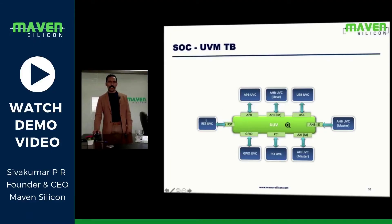So here we connect ResetUVC with ResetInterface, APB-UVC with APB-Interface, AHB-UVC — in this case the interface is master, so I configure this UVC as slave; only the slave agent is going to be there. And this is USB, USB-UVC. This is AHB slave, so I'm configuring the UVC as master — look at here.